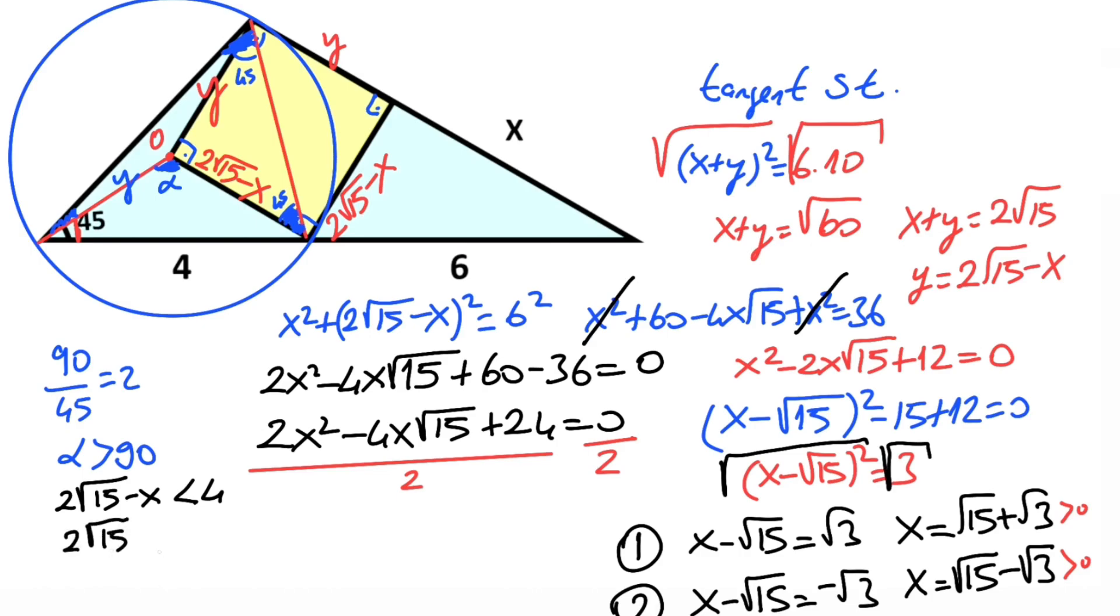Therefore, 2 root 15 minus 4 must be less than x. We know that the square root of 15 is approximately 3.9, so 2 times 3.9 minus 4 is less than x. Therefore, x can't be root 15 minus root 3. So x is root 15 plus root 3.